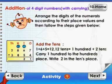Add the tens. 1 plus 6 plus 5 is equal to 12. 12 tens is equal to 1 hundred plus 2 tens. Carry 1 hundred to the hundreds place. Write 2 in the tens place.